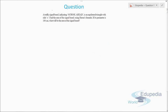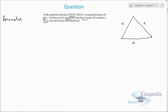Let's get started with question number one. The question says that a traffic signal board indicating 'school ahead' is an equilateral triangle with side 'a'. We need to find the area of the signal board using Heron's formula if its perimeter is 180 centimeters. Since it's an equilateral triangle, let's draw a triangle where each and every side equals 'a'.